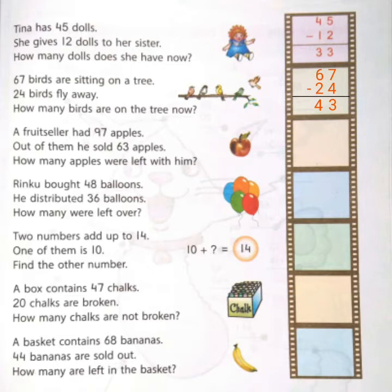Now, let's proceed to the next story problem. A fruit seller had 97 apples. Out of them, he sold 63 apples. How many apples were left with him? Here, children, how many apples were left means we have to do subtraction between 97 and 63.